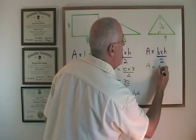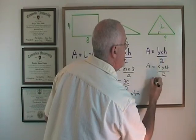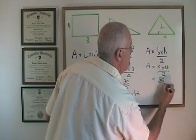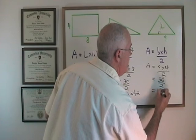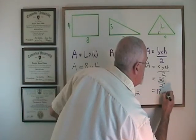Area equals 9 times 4 over 2 which is 36 over 2 which is 18 and again the unit is units squared.